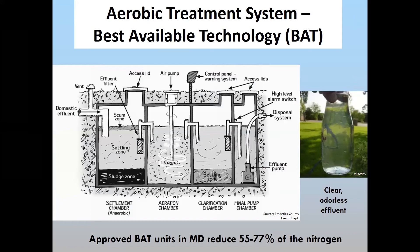BAT units provide advanced treatment — they supply aeration and oxygen to the bacteria, which helps break down organics. One of the advantages, beyond better nutrient and organic treatment, is that the effluent tends to be very clear compared to typical septic tank effluent. That actually allows for, in many cases depending upon the soil, a smaller drain field area and potentially prolongs the life of the drain field because you're not putting as much organic material out there.